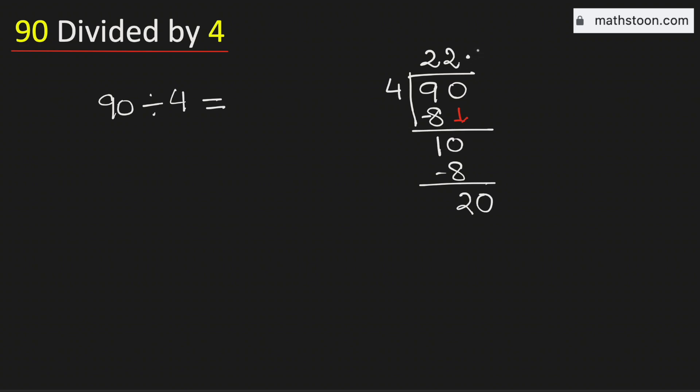Now we know that 4 times 5 is 20. Subtract, we get 0. As we have obtained the number 0, we will stop.